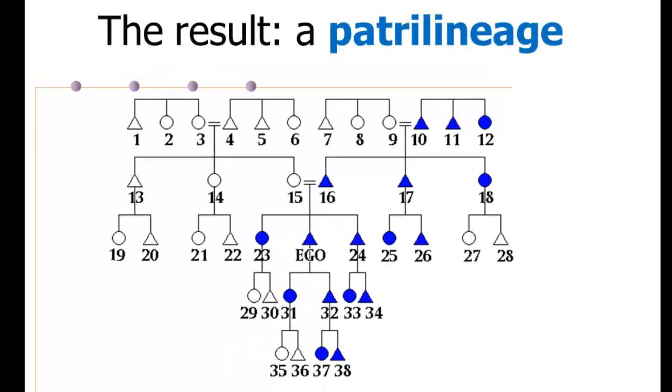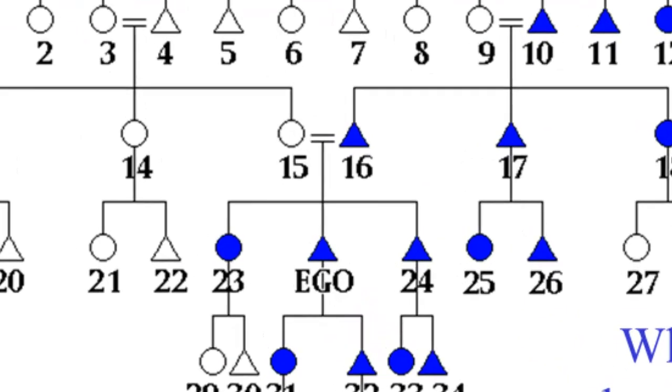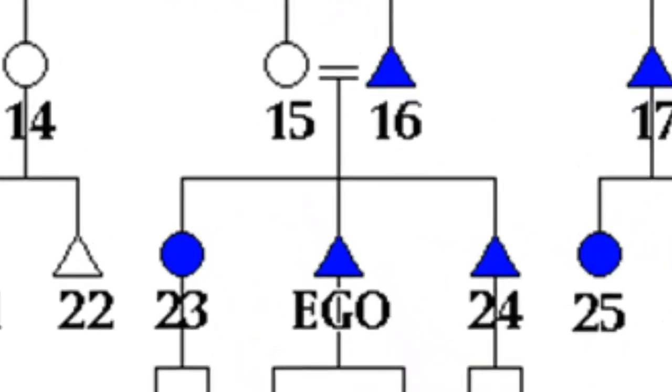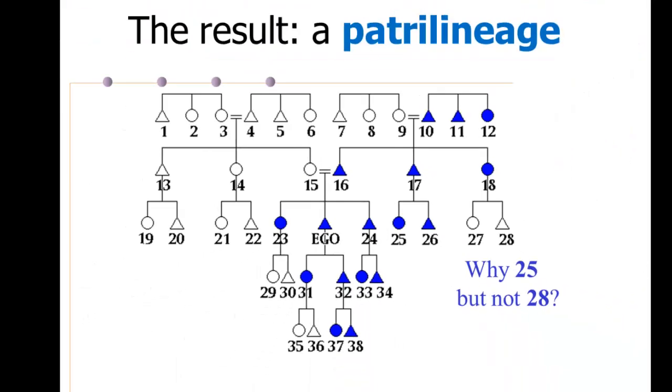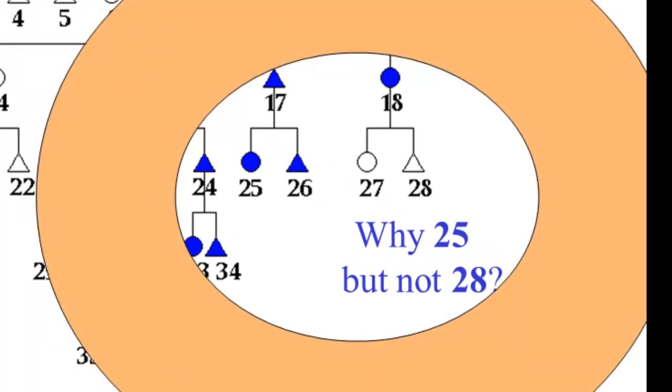The result of patrilineal descent, in terms of a corporate descent group, is called a patrilineage. And this chart shows a patrilineage. If we look at this chart, all of the individuals marked in blue belong to the patrilineage of Ego, who's at the center of it. Put yourself in Ego's shoes in thinking about this. But this question arises if we look over in the lower right-hand corner. And this is the question.